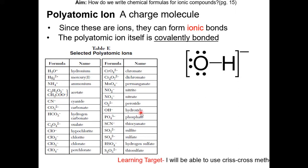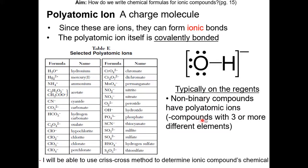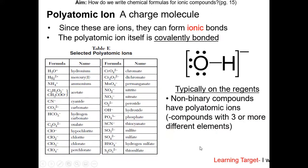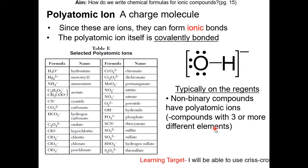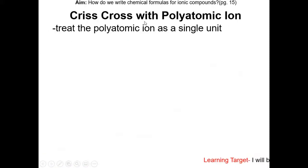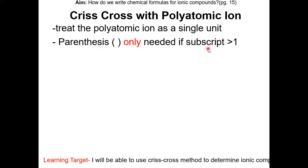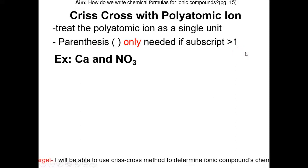For example, here is hydroxide, OH. Typically, non-binary compounds have polyatomic ions — compounds with three or more different elements. So if you see a compound with three or more different elements, there's a high chance there's a polyatomic ion in that chemical formula. If you plan to take the SAT2 and AP, you have to memorize table E. Since polyatomic ions can ionic bond with other ions, I'm going to show you how to crisscross with it. Treat the polyatomic ion as a single unit, and only use parentheses if the subscript is greater than 1.